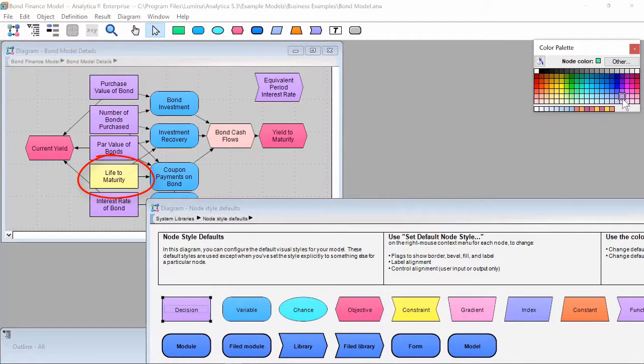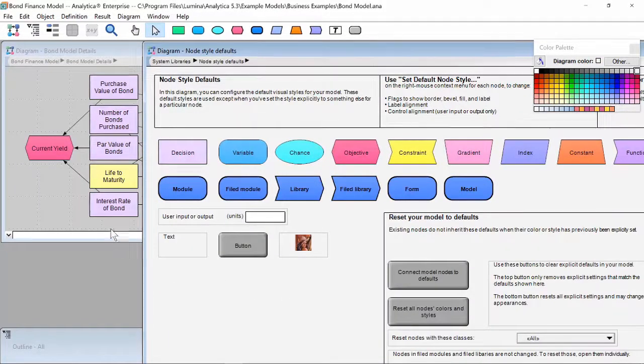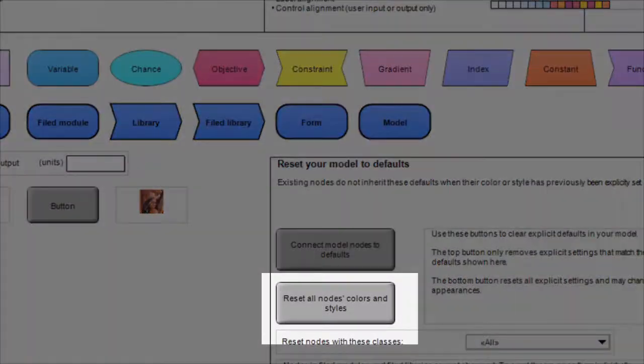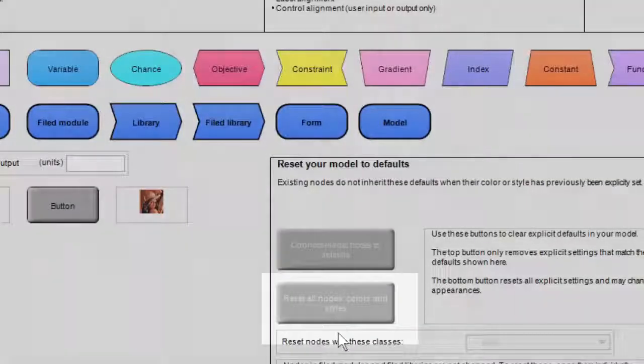But wait, one of our decision nodes didn't change colors. That's because the node was explicitly set by the user. If we didn't like this, we could go back to the Node Style Defaults window and hit play on the button on the bottom right titled Reset All Nodes as Colors and Styles. This will revert all nodes in the model to whatever the global colors are currently set as.